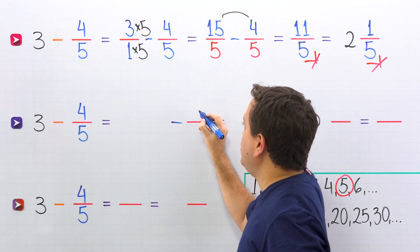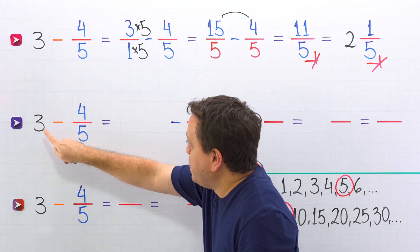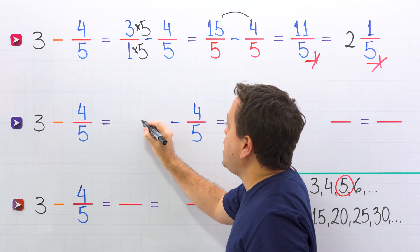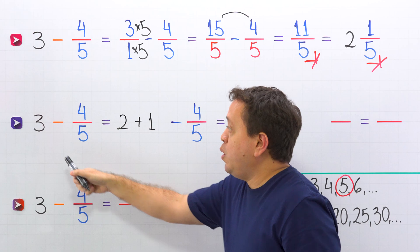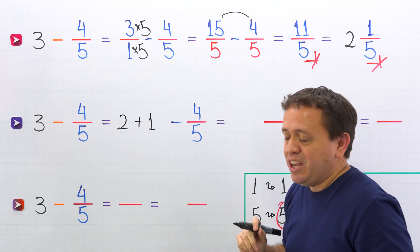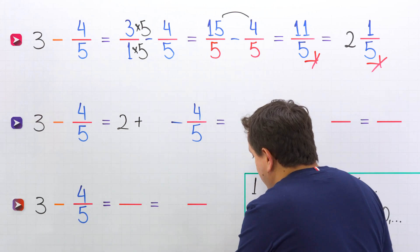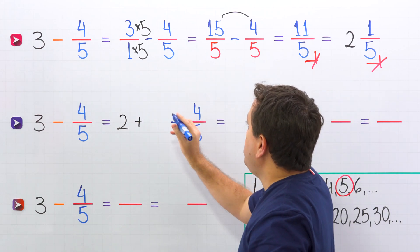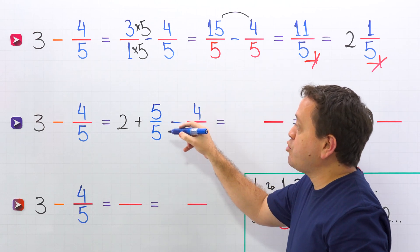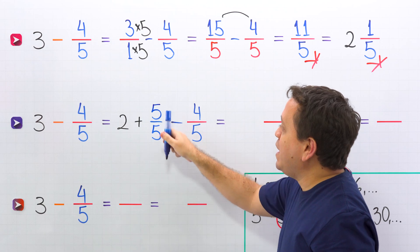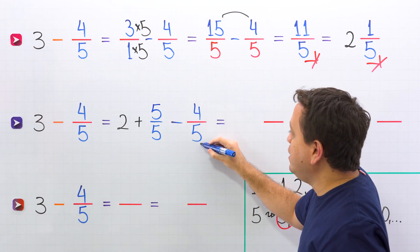First, we put minus 4 fifths at the end. The whole number is 3, and then we're going to rewrite 3 as the sum of 2 and 1. 2 plus 1 equals 3, so we don't have any trouble here. Next, we rewrite 1 as a fraction — that fraction will be 5 fifths. Don't forget that we can also see a fraction as a division: 5 divided by 5 gives us 1. We are using the number 5 because the denominator of this fraction is 5.